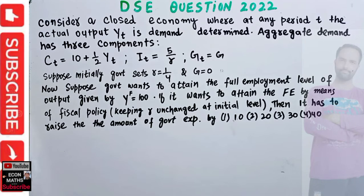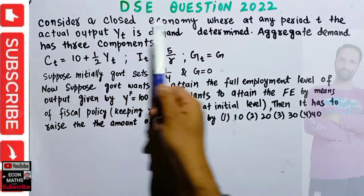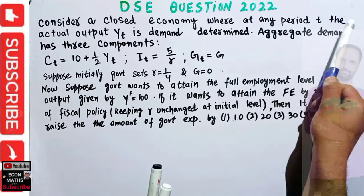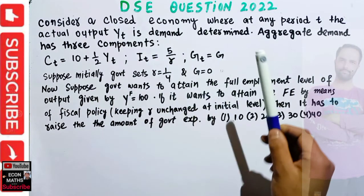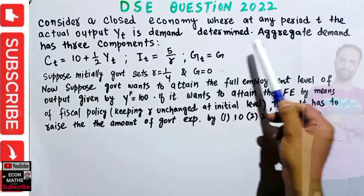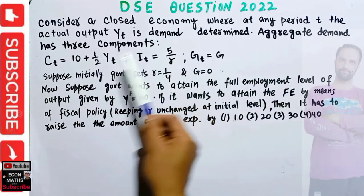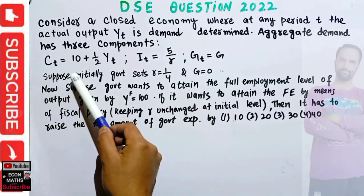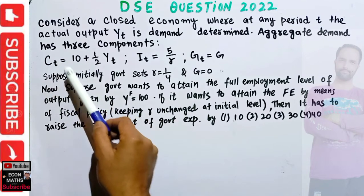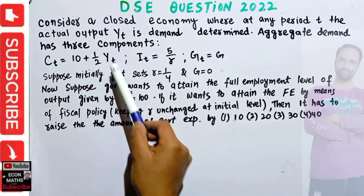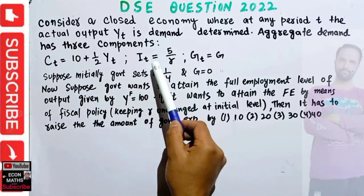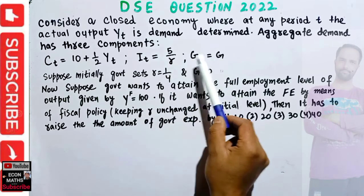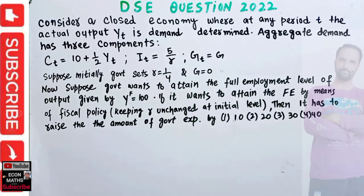Let us solve another question on the national income model. Consider a closed economy where at any time period t the actual output yt is demand determined. Aggregate demand has three components: consumption is c = 10 + (1/2)yt, investment is a function of rate of interest i = 5/r, and government expenditure g is autonomous.